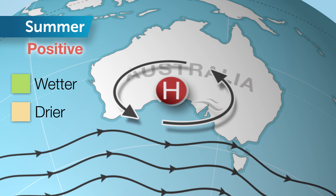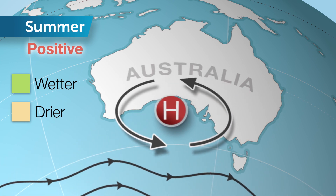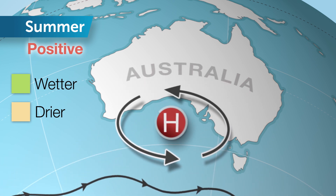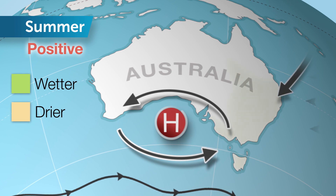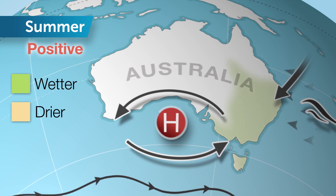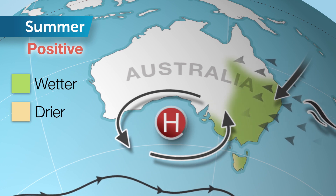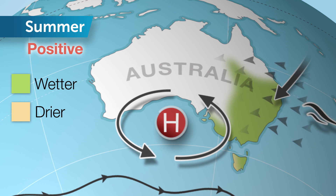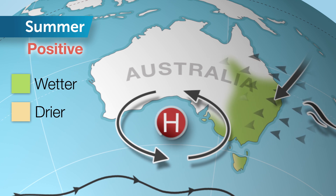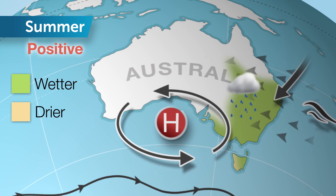During a positive phase of SAM in summer, the ridge shifts even further south. This expands the area receiving tropical air from the north and allows more moist onshore winds along the east coast. More available moisture means more chance of rain.